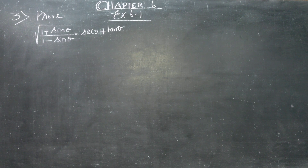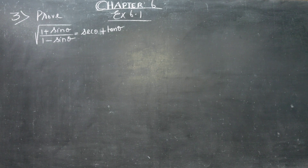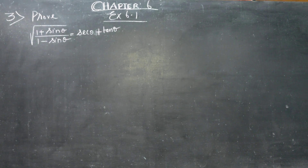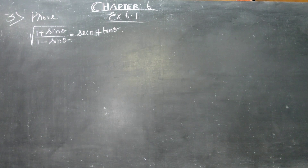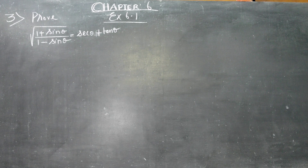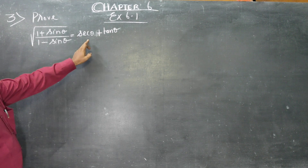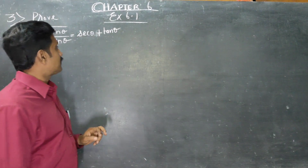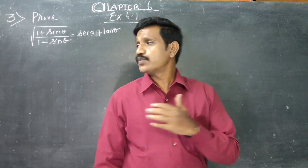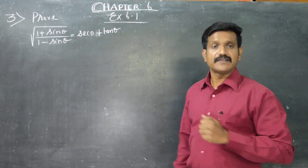Hello 10th standard students. In the terminode syllabus, Chapter number 6, Trigonometry. We are going to prove sum number 3: square root of (1 plus sin theta) by (1 minus sin theta) is equal to secant theta plus tan theta. We have to prove this identity.